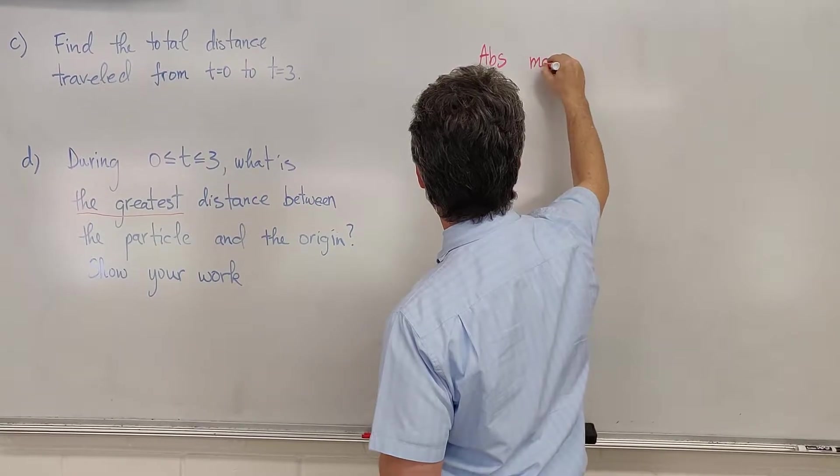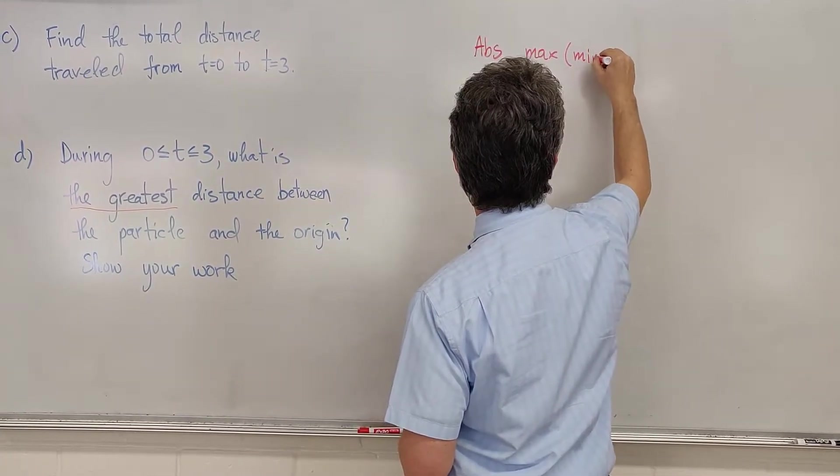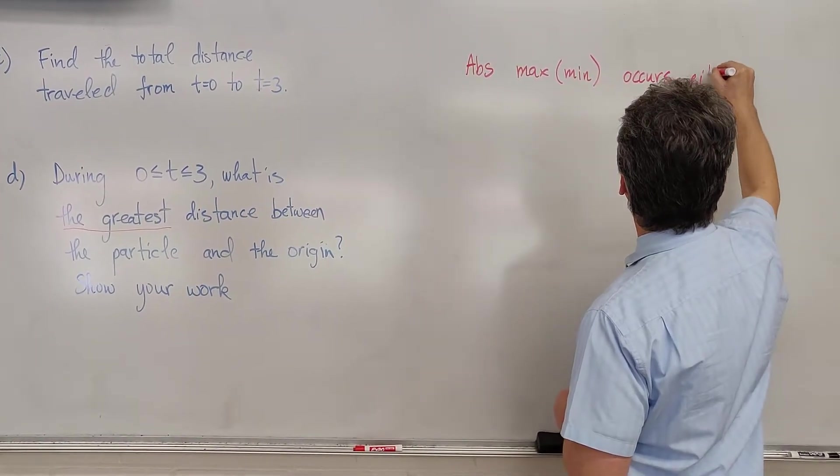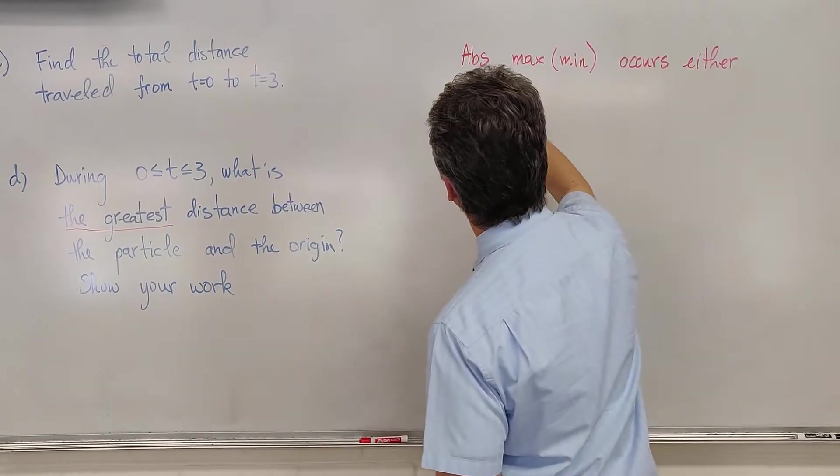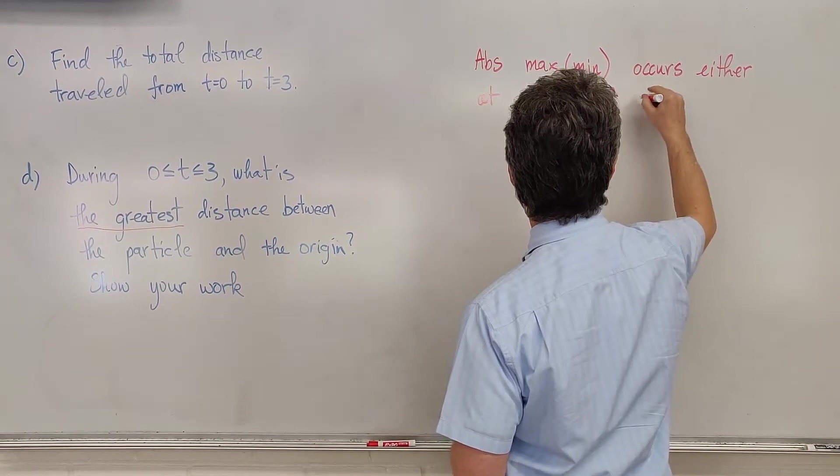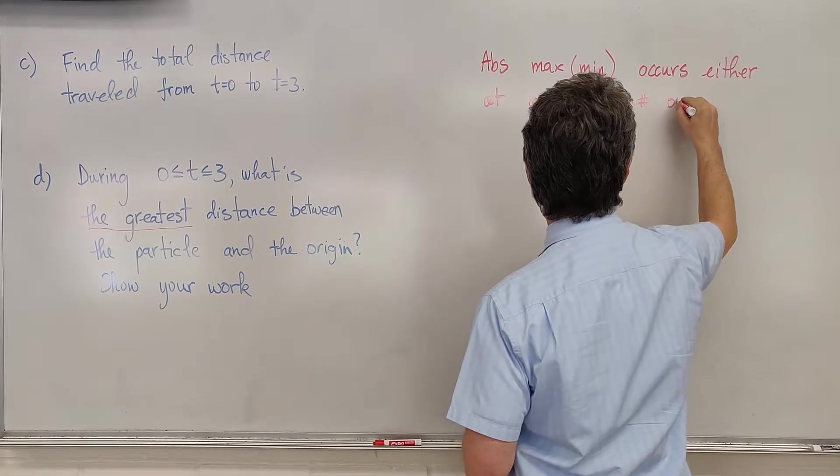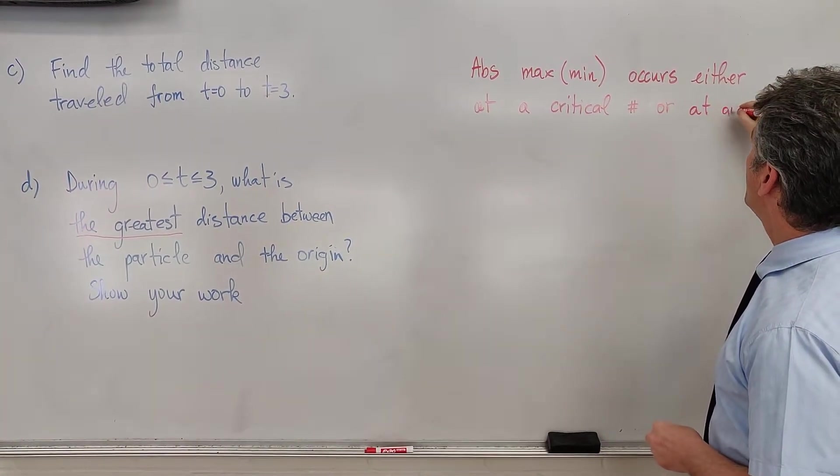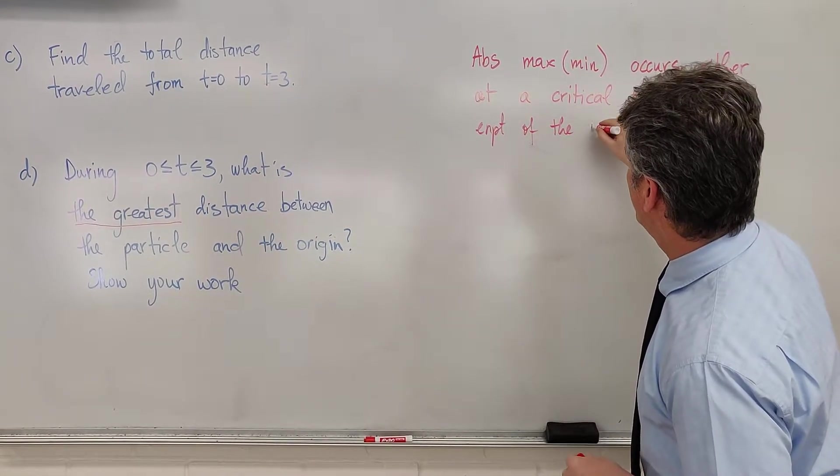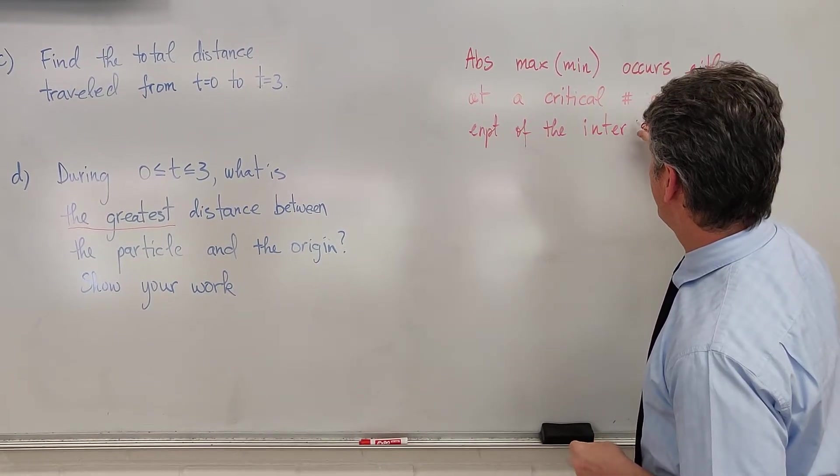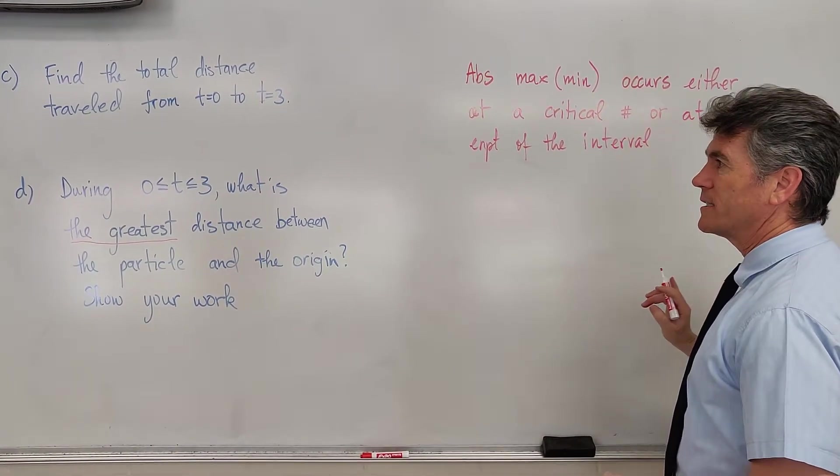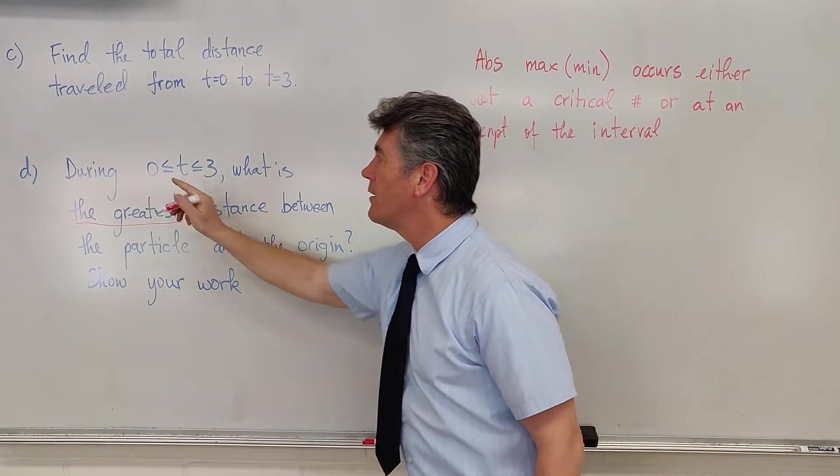Absolute max or min occurs either at a critical point, critical number, or an absolute endpoint of the interval. So what are we interested in? We're interested in three things. The important points are 0 and 3.